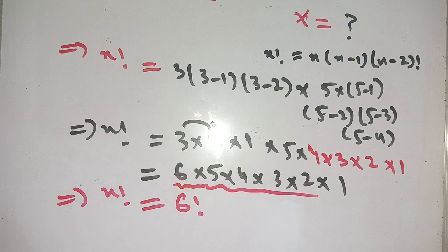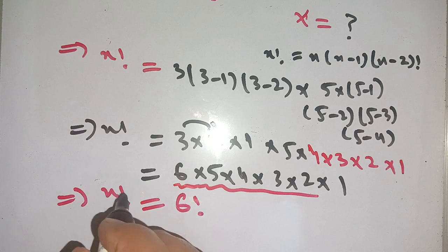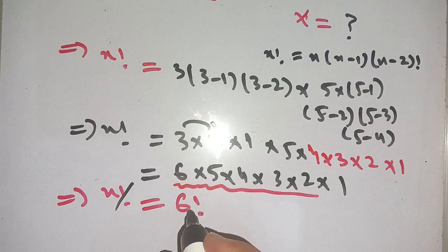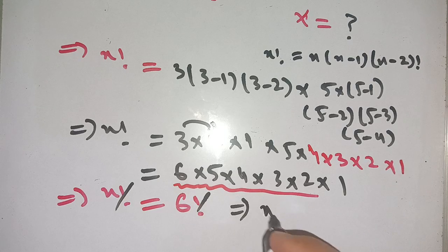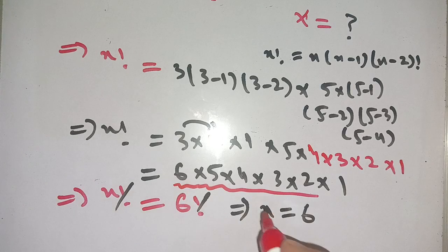Now we can cancel out this factorial from left hand side as well as from right hand side. Thus the value of x is equal to six, which means that x is equal to 6.